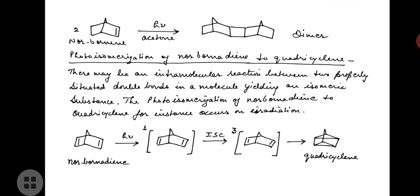In the first part there will be generation of an excited triplet state molecule of acetone. Acetone on irradiation will form an excited triplet molecule, and this excited triplet molecule will react with a ground state olefin molecule, and the product dimer is formed.